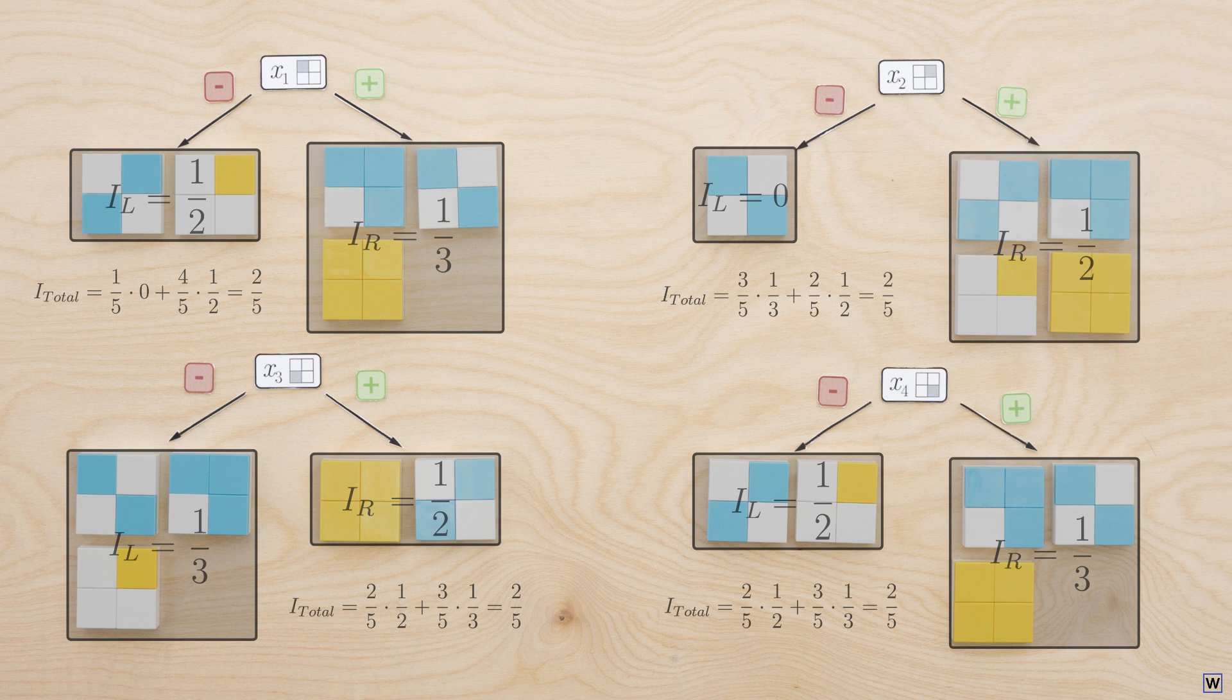Somehow, after all that work, we're right back where we started. All splits appear equally good. Clearly, our heuristic is not doing the job we designed it for. But why? Why does taking the weighted average of the impurity of each node take us right back to where we started?